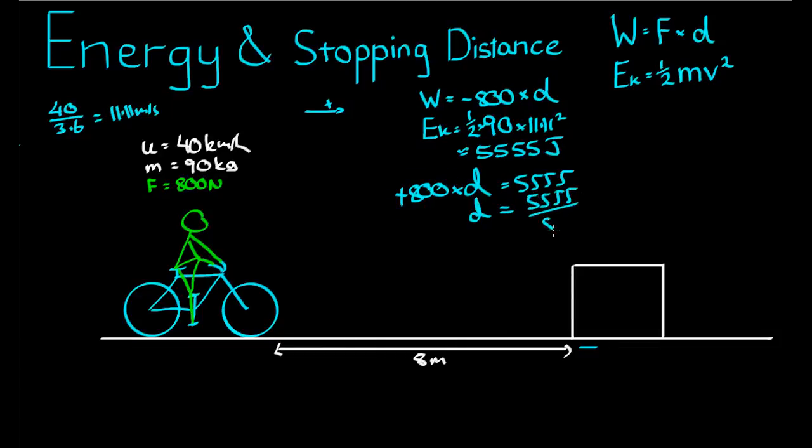Which is equal to 6.94, or around about 6.94 meters. So the stopping distance of this bike is equal to 6.94 meters.